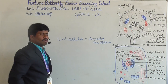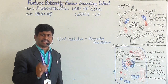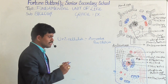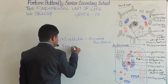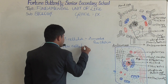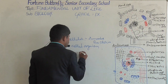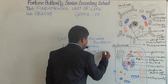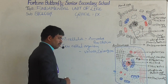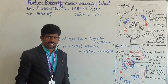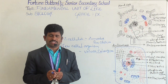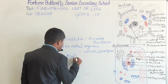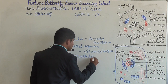Next, there are organisms whose body is made up of hundreds and thousands of cells — those organisms are known as few-celled organisms. Examples are Volvox and Spirogyra. Then there are multicellular organisms, whose body is made up of millions and trillions of cells.